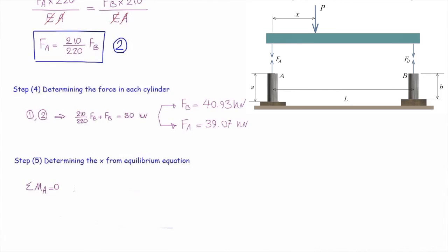So, sum of the moments about A should be zero. Let's write down the moments. F_B times 3, that is the distance of point B to A, minus 80 kilonewtons times X, which is the arm of 80 kilonewtons from point A, should be zero.